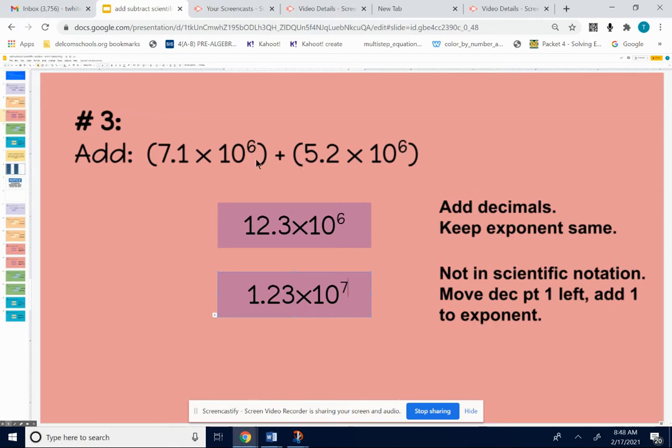I added the decimals. I kept the 10 to the sixth the same, but then I had to change this answer into scientific notation. If I move the decimal point 1 to the left to get it in the right place, I've got to add 1 to my power of 10 to make that 7.